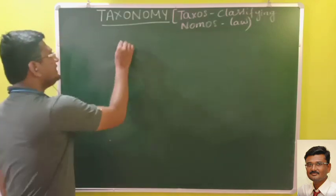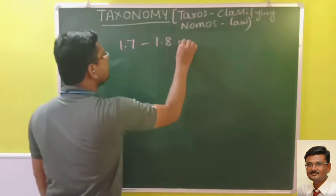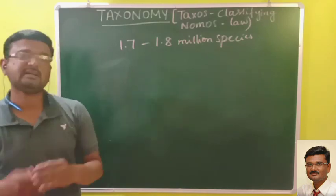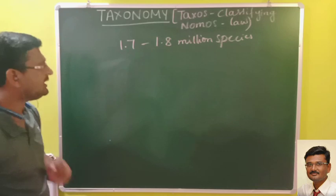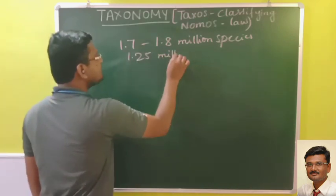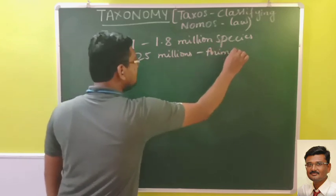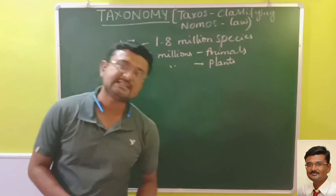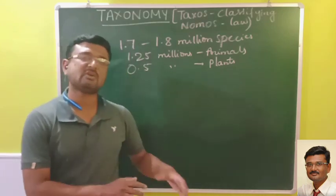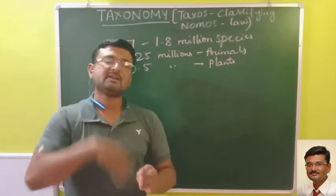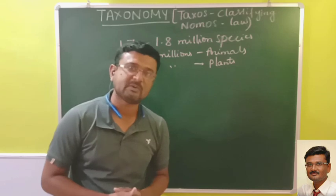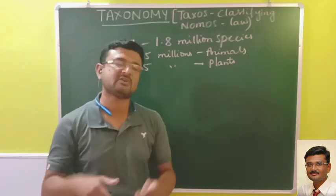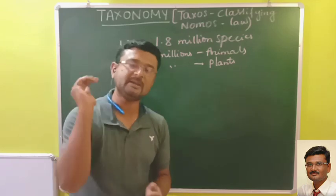After identification, it is most important that an organism should have a proper name. Currently we have nearly 1.7 to 1.8 million species that have been discovered or named. Among those, 1.25 million species are animals and 0.5 million species are plants. Many studies suggest there are more than 8 million species probably present in the world, with many plants, animals, and microorganisms yet to be discovered.